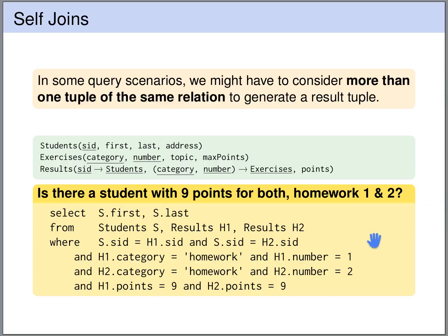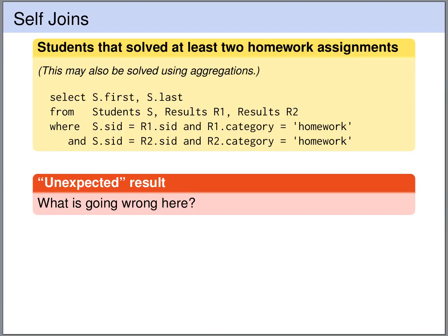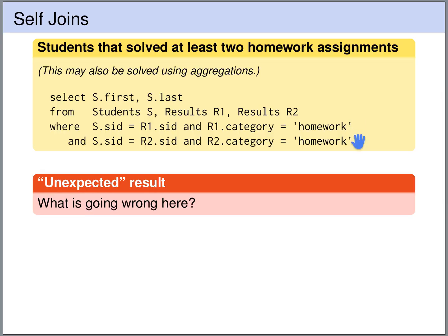We can see on the slides we almost have the same solution we've just developed. Now we want to write a query that gives us all the students that have solved at least two homework assignments. This query does not work — but why? We query the students table, we query results once, we query results a second time. We have a join condition ensuring that the R1 row matches the student. We specify we only look at homework results for R1 and also only homework results for R2, so we are looking at two rows for the correct student, both of them homework results. So why does this query not give us what we want?